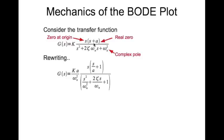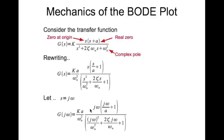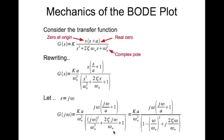What I've essentially done is brought out this A, brought out the omega_n squared and combined it with this constant K to get a new constant, and these factors end up looking like this. Let's set s equal to j*omega — that will give us this expression, and that simplifies to this. All I've done here is multiply j*omega out squared, which gives me minus omega squared, combined with one.